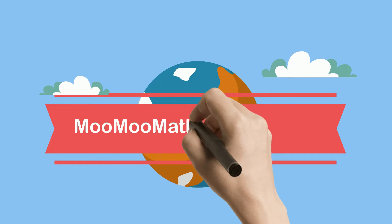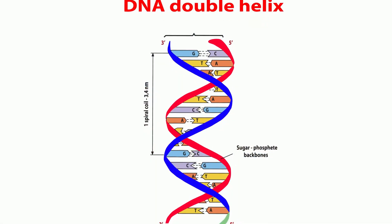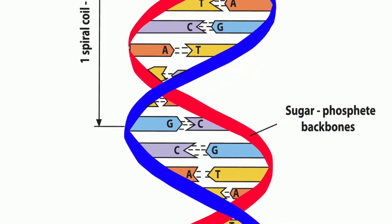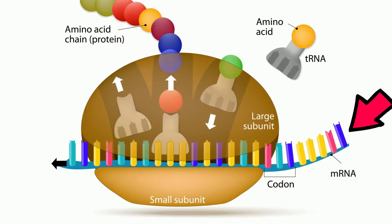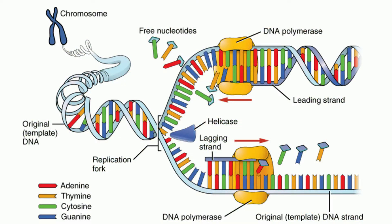Welcome to MooMooMath and Science and Mutations. An important dogma of genetics is that DNA is used as a template for RNA, which codes for proteins. Mutations may occur when the DNA makes a copy of itself, or they can be caused by environmental factors.